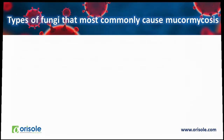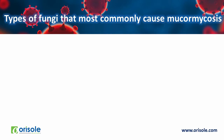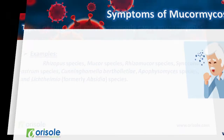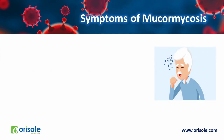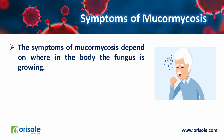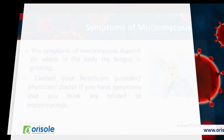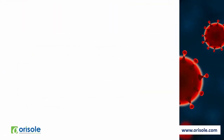Examples of fungi that most commonly cause mucormycosis include Rhizopus species, Mucor species, Rhizomucor species, Apophysomyces species, and others. The symptoms of mucormycosis depend on where in the body the fungus is growing. Contact your healthcare provider or physician if you have symptoms that you think are related to mucormycosis. Let us see a few symptoms that are common in different types of mucormycosis.